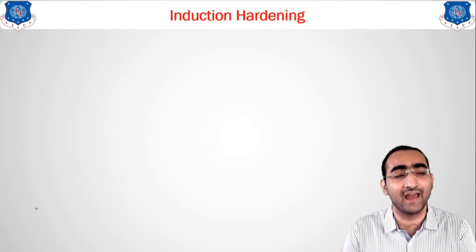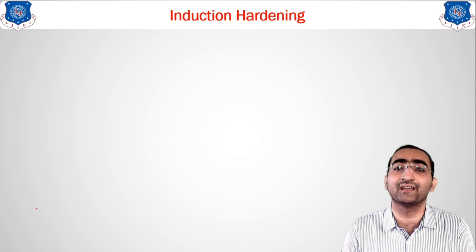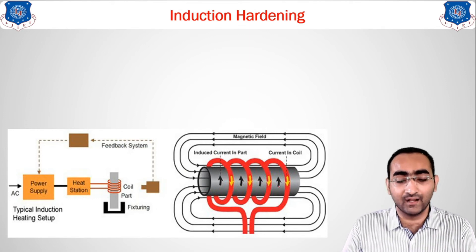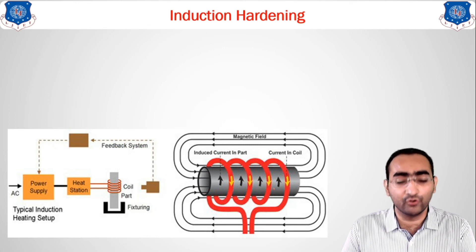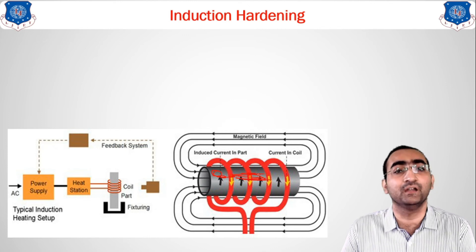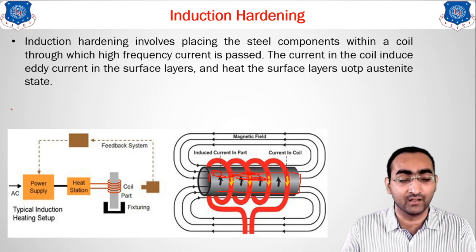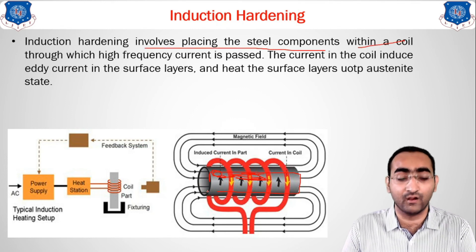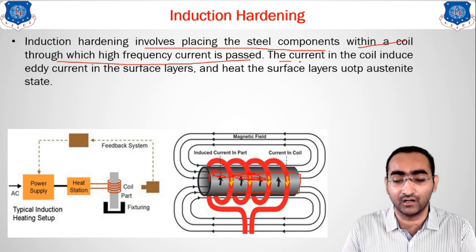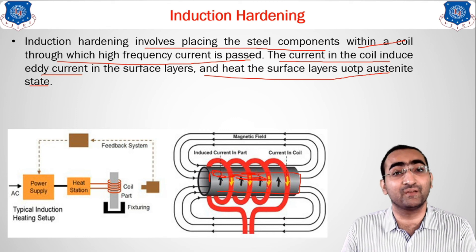The last method is induction hardening, using the same concept as an induction cooker or induction furnace. The material is placed between a coil. When current is applied through the coil, a magnetic field is generated, which in turn generates electric current (eddy current), heating the material. Induction hardening involves placing the component within a coil through which a very high frequency current is fired. The eddy current heats the surface layer up to the austenitic range.